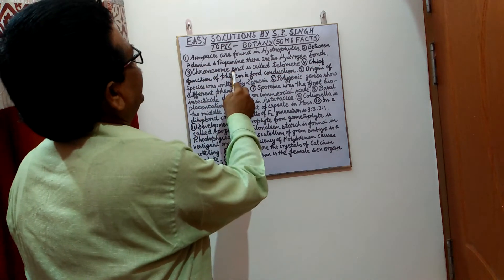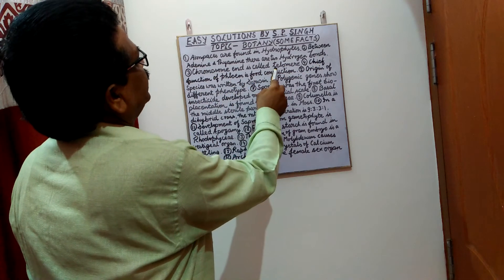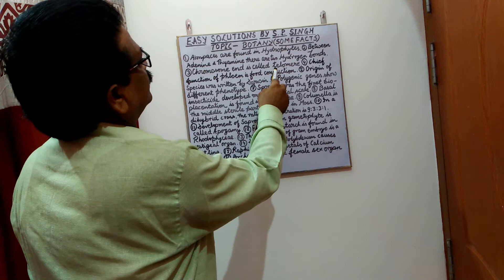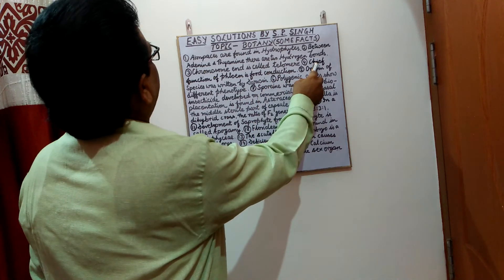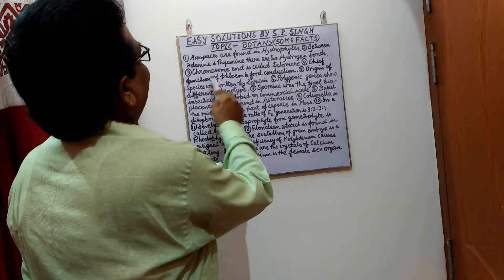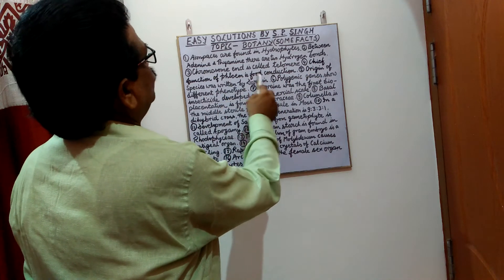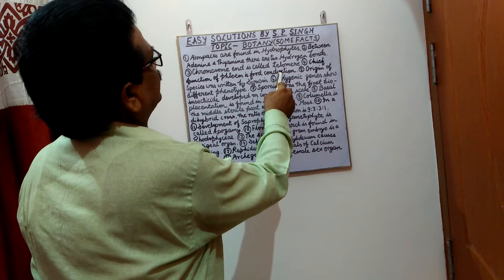Chromosome end is called telomere. Chief function of phloem is food conduction.